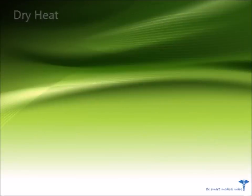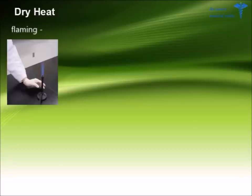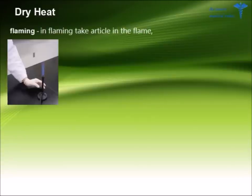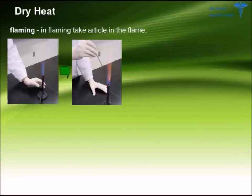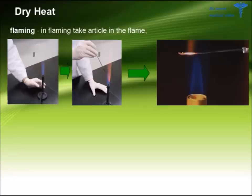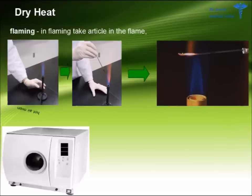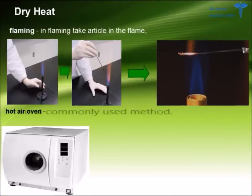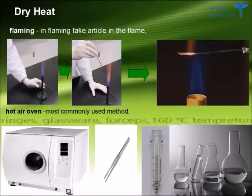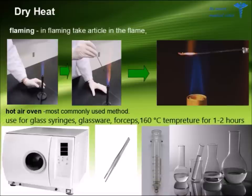Dry Heat. In dry heat, first we will start from flaming. In flaming, take the article in the flame; when the article becomes red in the flame, sterilization is done. Hot air oven — it is an electric oven and is the most commonly used method. It is used for glass syringes, glassware, and forceps. In the hot air oven we use 160 degrees Celsius temperature for 1 to 2 hours.